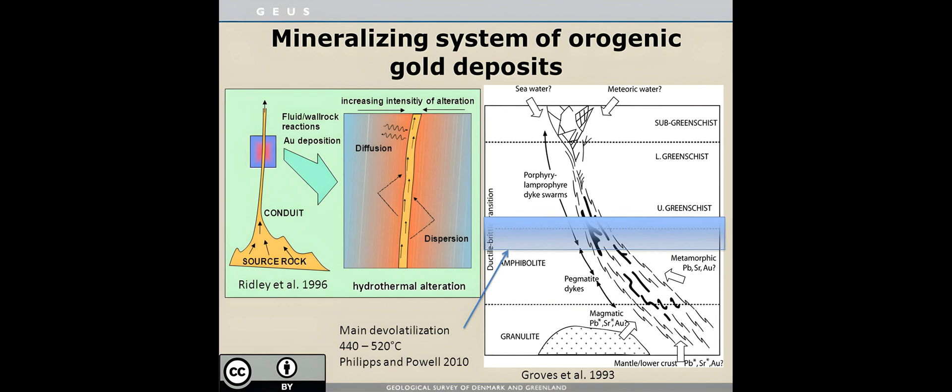Although efforts have been made to define a specific deformation structure associated with the formation of orogenic gold deposits, no specific structure could be identified. Rather, there are various types of faults hosting gold deposits. Nevertheless, orogenic gold deposits have a number of repetitive structural geometries that control ore fluid formation, transport, and precipitation.